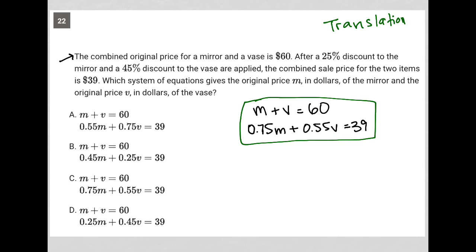So let's see where we have a match. Not at A, not at B. Yes, at C. We have M plus V equals 60 and we have 0.75M plus 0.55V equals 39. So choice C is correct.